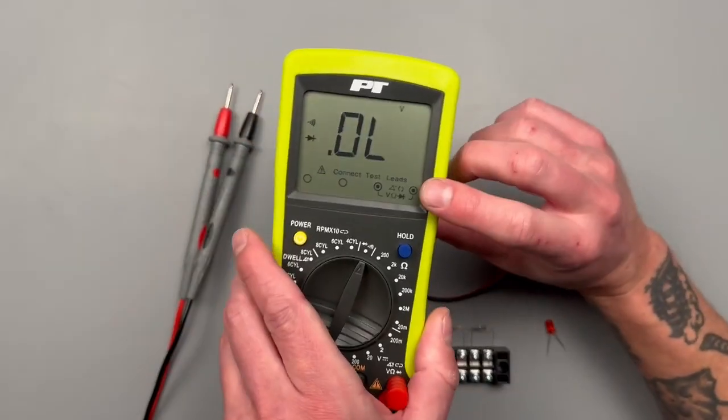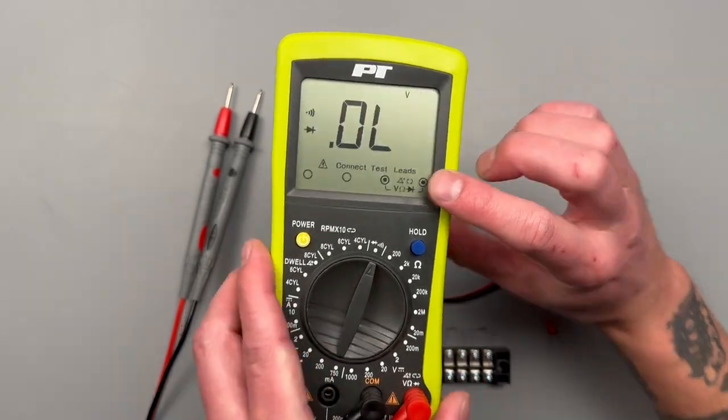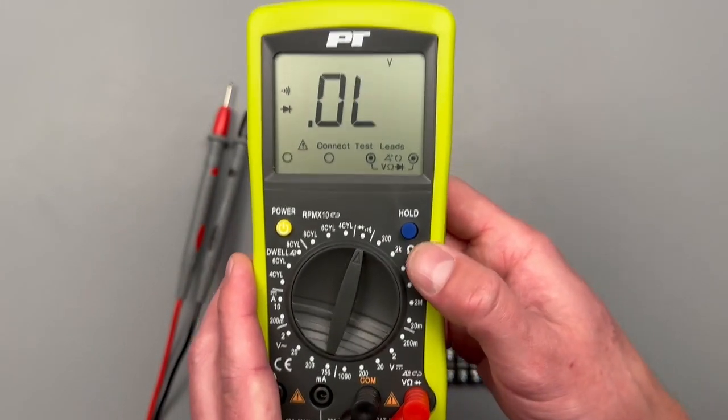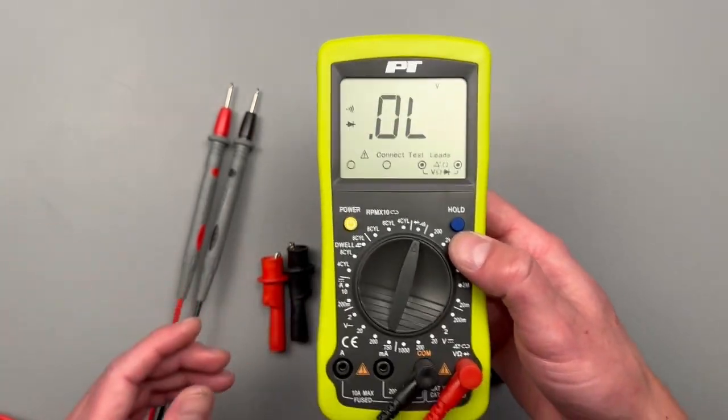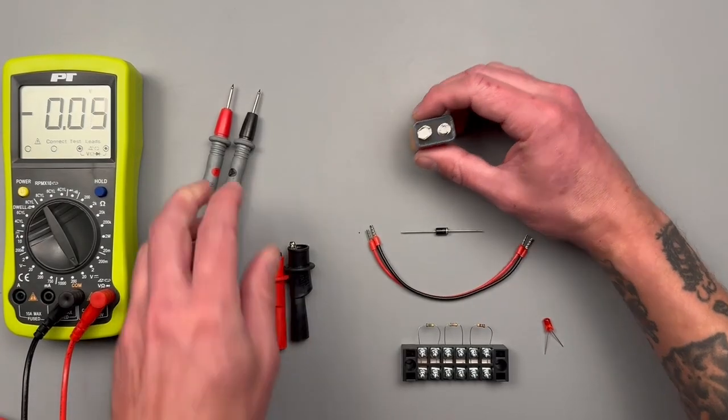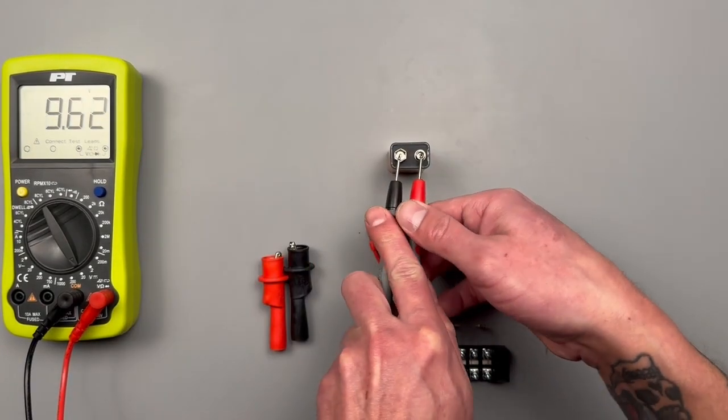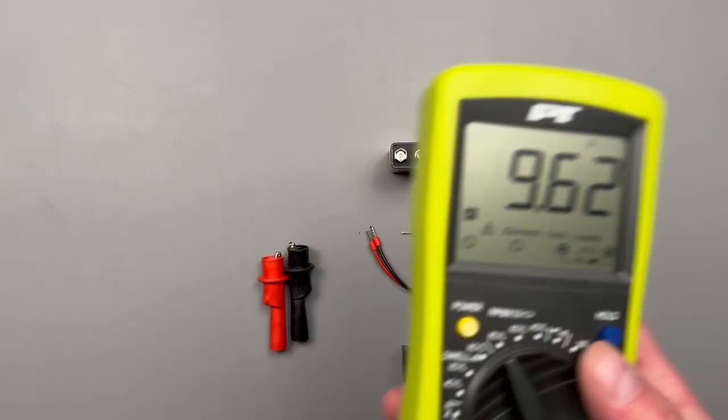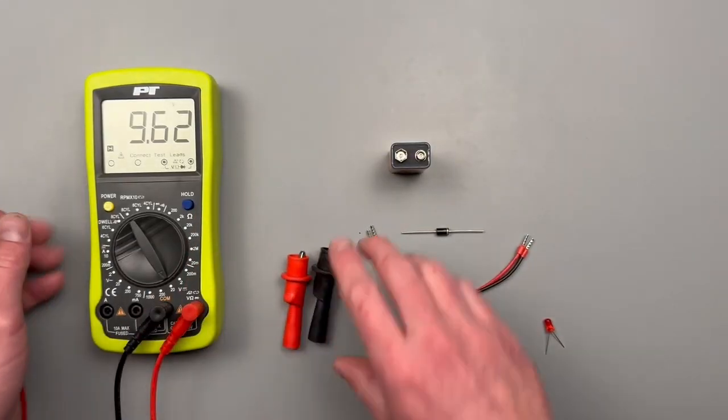So I like the large display. I like that it shows you where to connect the test leads. There is unfortunately no backlight. The only other function is this hold button. Say you take a measurement of something, this nine volt battery, I can press hold and then it's going to hold that value for me in case I need to write it down or anything like that.